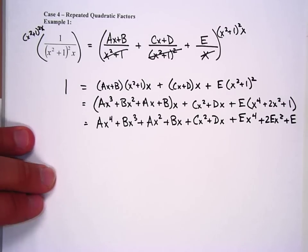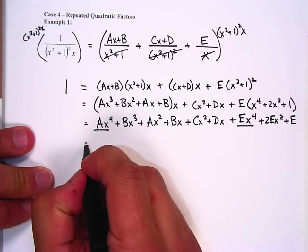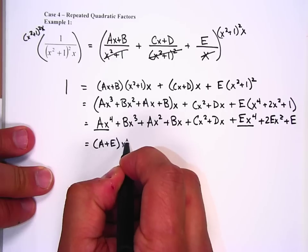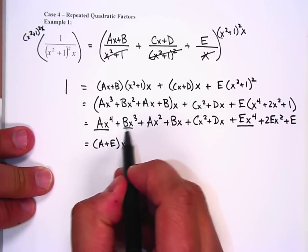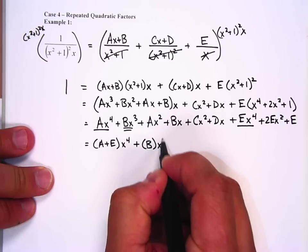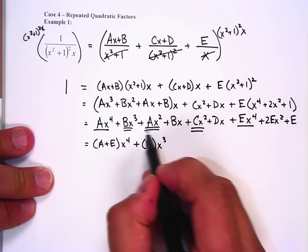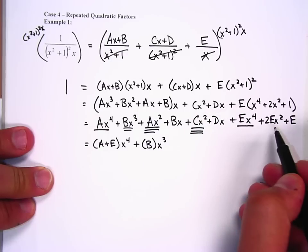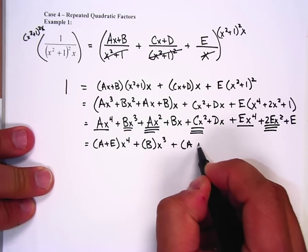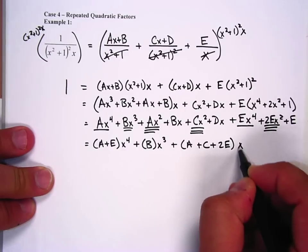Group like terms. Well, I'm going to run out of pens here, but we've got ax to the fourth and ex to the fourth, so that's going to give me (a plus e) x to the fourth. We only have one x to the third power, so that's going to be bx to the third. I have three x squared terms, so that's going to be plus (a plus c plus 2e) x squared.